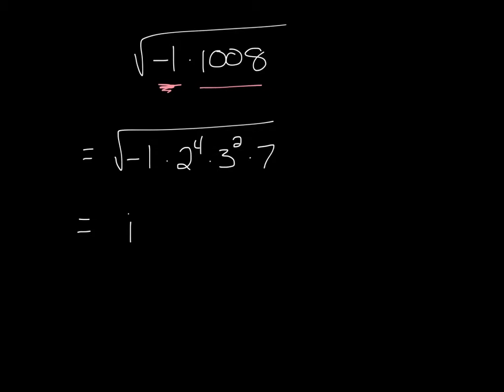The square root of 2 to the 4th is 2 squared, and the square root of 3 squared is 3, and then this 7 is left underneath the square root because I can't take the square root of it nicely.